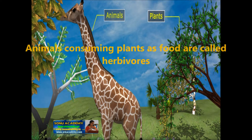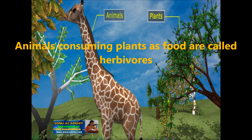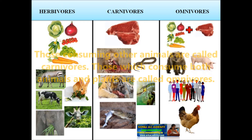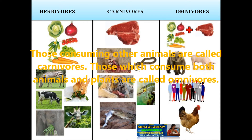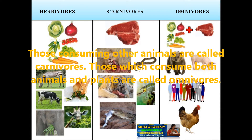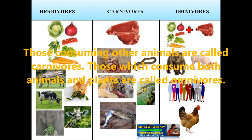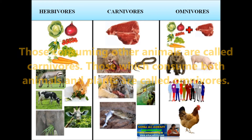Animals consuming plants as food are called herbivores, and those consuming other animals are called carnivores. Those which consume both plants and animals are called omnivores.